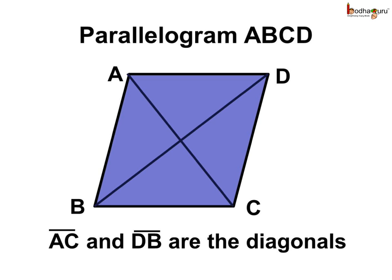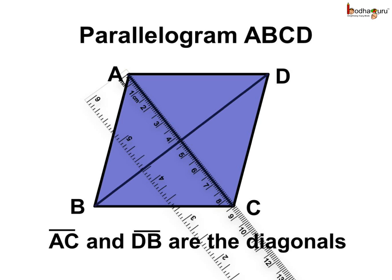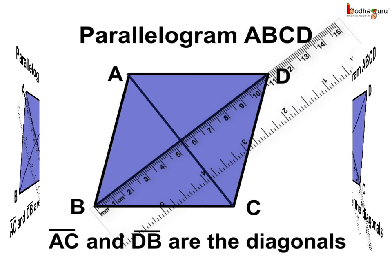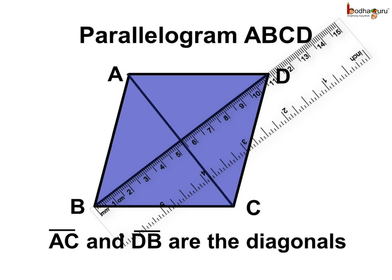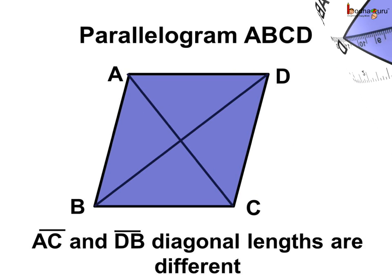In this parallelogram, AC and DB are the diagonals as they join the opposite vertices. Let us check the length of the diagonals using a ruler. Diagonal AC is 8.5 cm long, and diagonal BD is 10.9 cm long. So the two diagonals AC and DB are of different lengths.